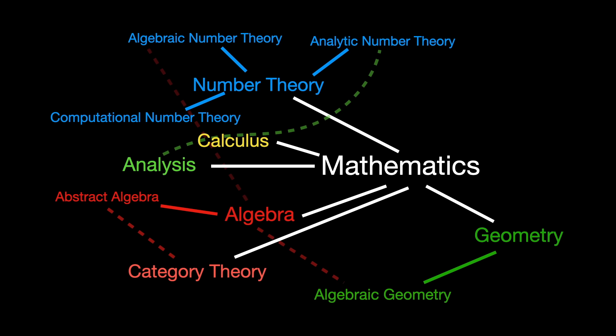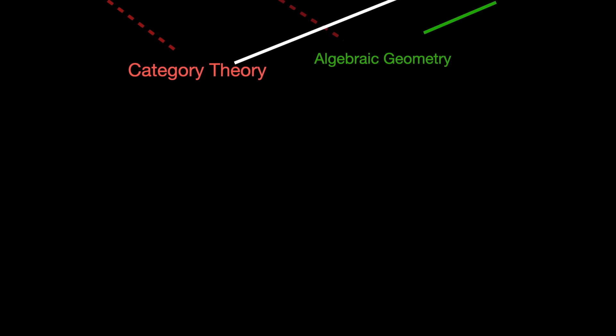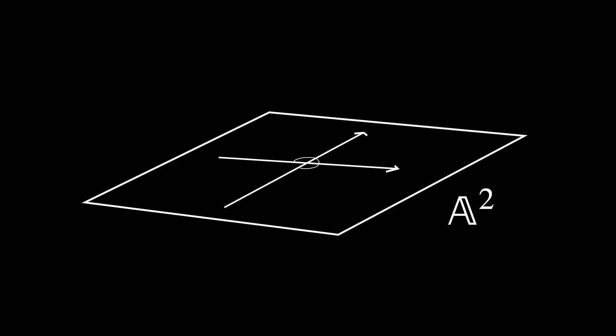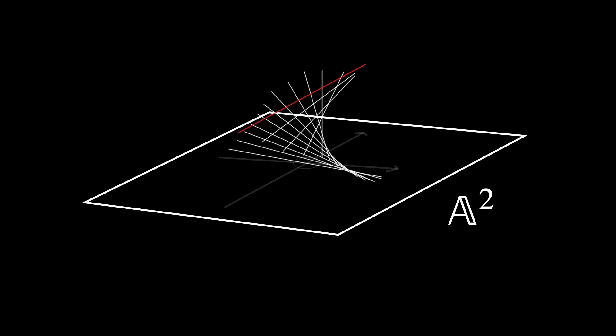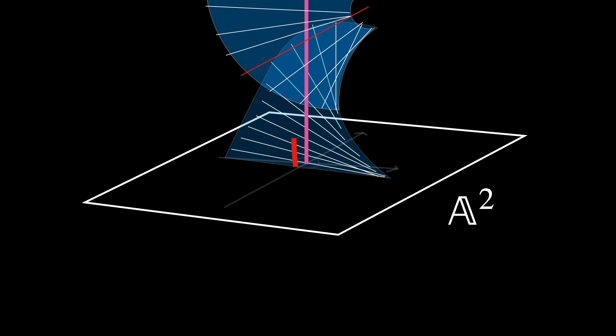Algebraic Geometry. It studies properties and relationships of geometric structures that can be described algebraically through polynomial equations. This field combines abstract algebraic concepts, such as rings and fields, with geometric intuition.